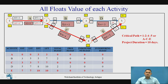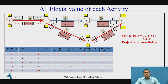Let's find all float types for activity A. Total float: LST minus EST = 0 minus 0 = 0. Free float: activity A has two succeeding activities, B and C. EST of B and C is 3, minus EFT of activity A which is 3. So 3 minus 3 = 0 for both B and C as succeeding activities.